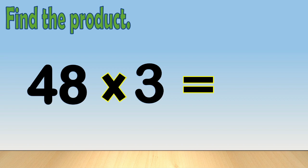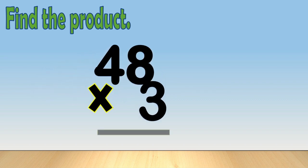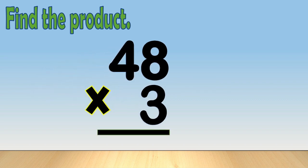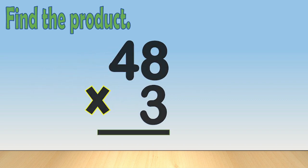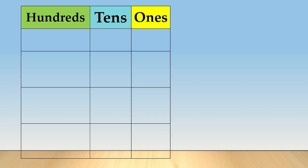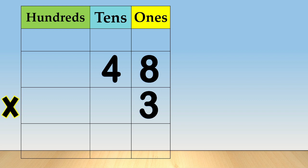Another example — find the product: forty-eight times three. First, arrange the numbers in columns like this. Place each digit in a column based on its place value. Next, multiply the digit in the ones place with the multiplier, three.